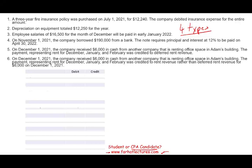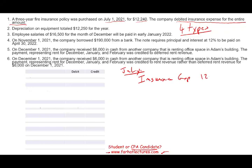A three-year fire insurance policy was purchased on July 1st, 2021 for $12,240. The company debited insurance expense for the entire amount. First, let's journalize the basic journal entry when this event occurred. We're doing everything as of December 31st — all adjusting entries assume a year end of December 31st. On July 1st, we bought the policy and debited insurance expense for the entire amount, and credited cash for the entire amount.